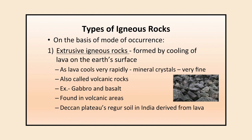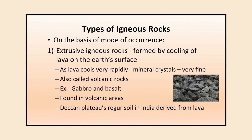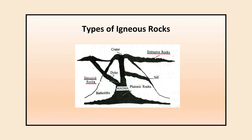On the basis of mode of occurrence, there are extrusive igneous rocks and intrusive igneous rocks. Extrusive igneous rocks are formed by cooling of lava on the Earth's surface — they cool very rapidly, so the mineral crystals formed are very fine. These are also called volcanic rocks; examples are gabbro and basalt. In India, the Deccan Plateau's regur soil is derived from lava, and igneous rocks are abundant in the Deccan Plateau.